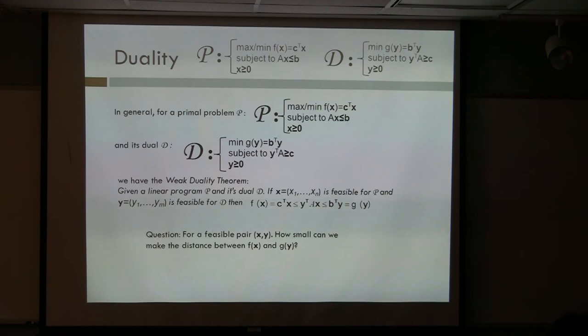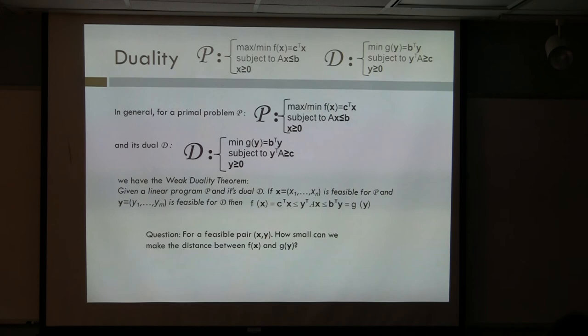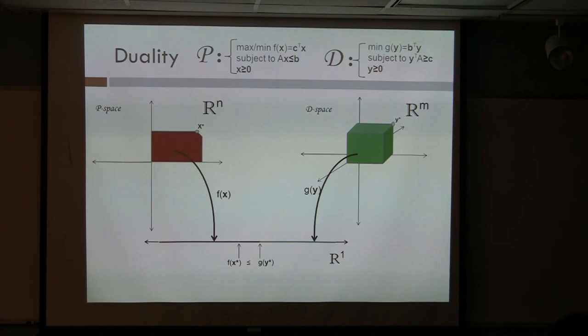I want to ask the question for what I call a feasible pair x and y — a pair that satisfies the constraints here for y, and x satisfies the constraints here. How small can we make that distance between F of x and G of y? G of y is the upper bound on F of x, and we want to minimize that function to see how small we can make the upper bound. But is there a gap? That's the question.